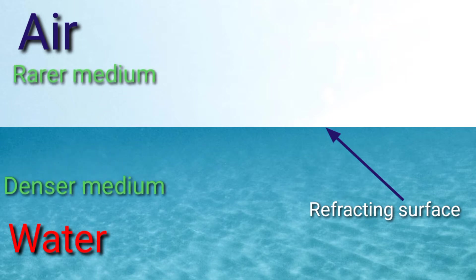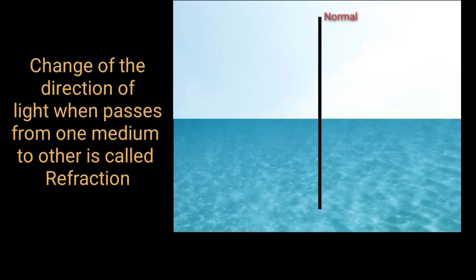The process of changing speed at any interface when light travels from one medium to another results in a change in the direction of the light. This change of direction is called refraction.